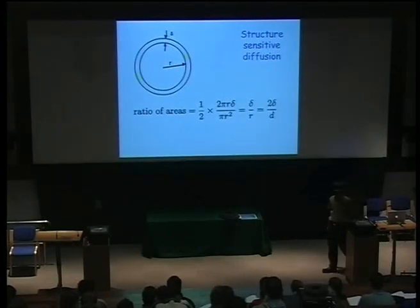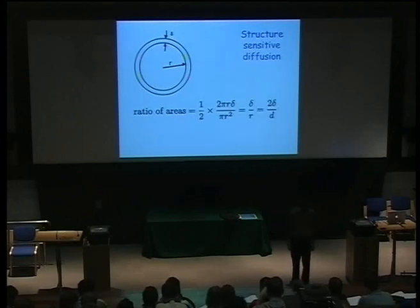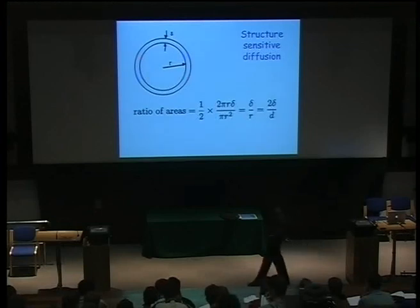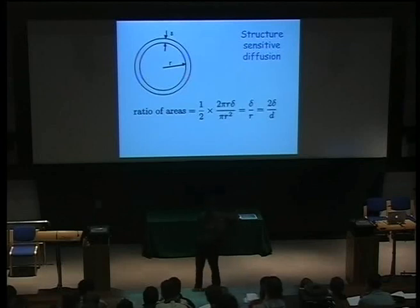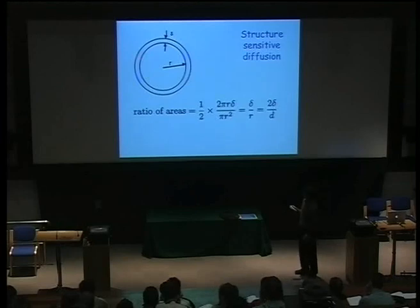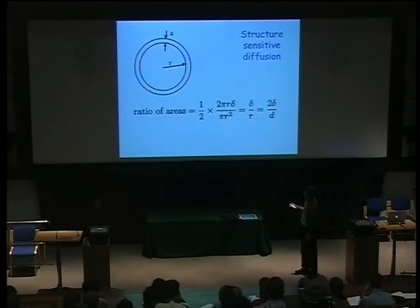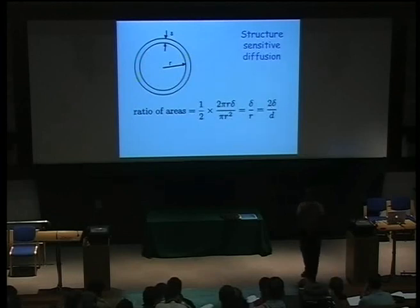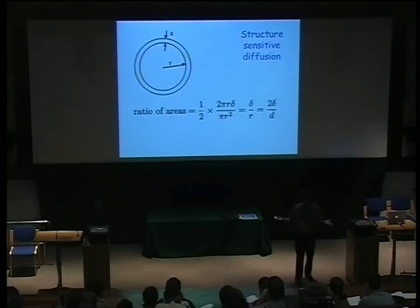Let's imagine an idealized model of a grain in a polycrystalline material. The grain is circular with radius r, and the grain boundary has thickness delta. Typically delta is no more than a couple of atoms in thickness, since a grain boundary is a very narrow region of misfit between two crystals. The fraction of material at the grain boundary versus the perfect region is simply the ratio of two areas, which comes out as two delta over the diameter of the grain — the area of the ring divided by the total area.